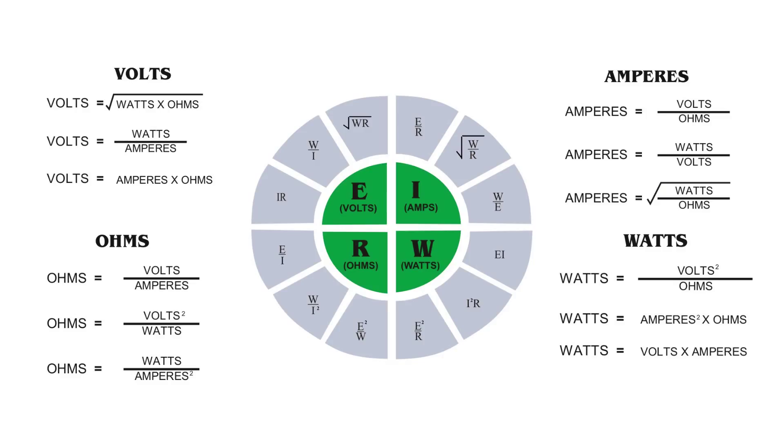And this leads us to the overall pie chart. Basically what this shows is from any two of the variables, you can come up with all four. Either voltage, current, resistance, or watts can all be calculated from this chart, which makes it very easy to do Ohm's Law.